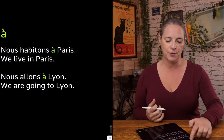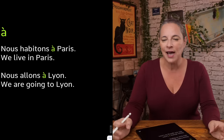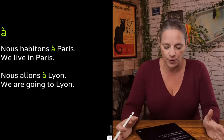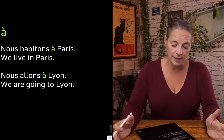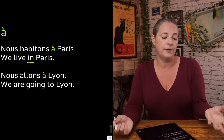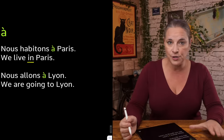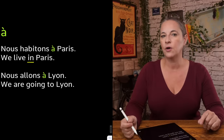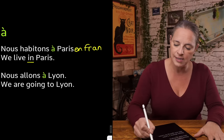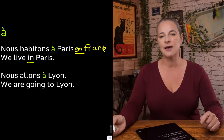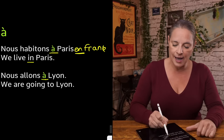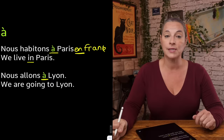So 'en' is one preposition. What about 'à'? You would use 'à' when you refer to a town. So: 'nous habitons à Paris' — we live in Paris. In English you don't make the difference between a town or a country, but in French you do. So, 'à' for a town, 'en' for a country. 'Nous habitons à Paris, en France' — two different prepositions: 'à' for the town and 'en' for the country. 'Nous allons à Lyon' — Lyon is a town in France, so it is 'à.'